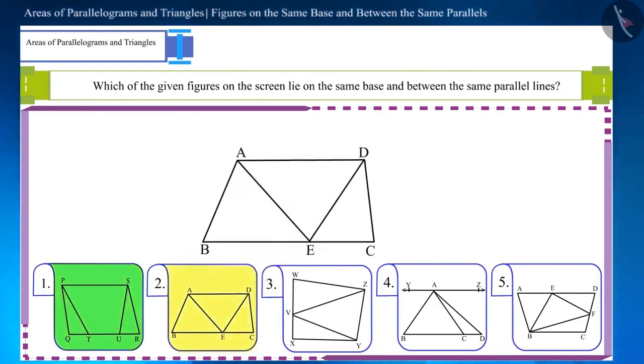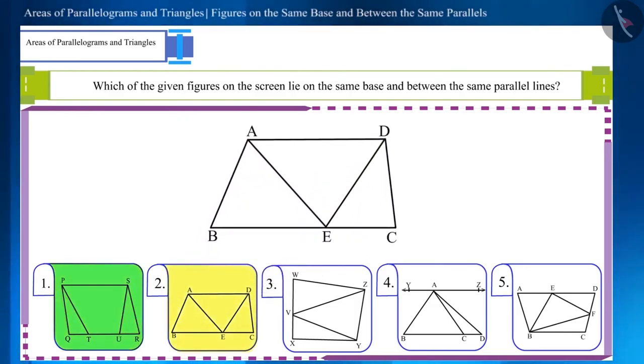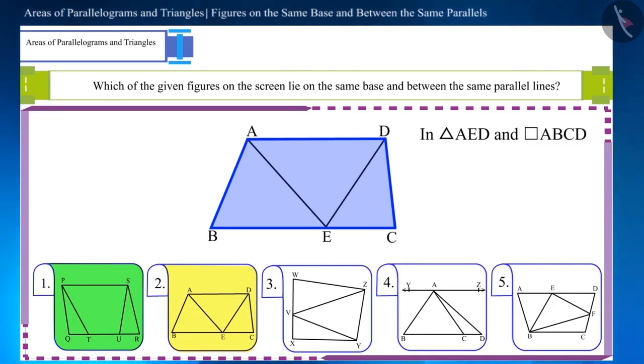In the second figure, there are two different figures. One is triangle AED and the other is parallelogram ABCD. Both are located between the two parallel lines AD and BC. And their base, AD, is also the same.